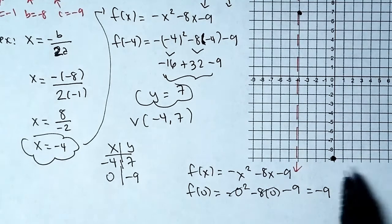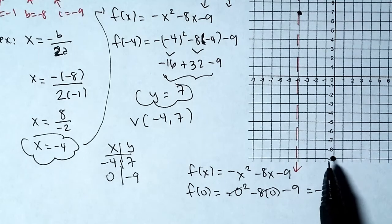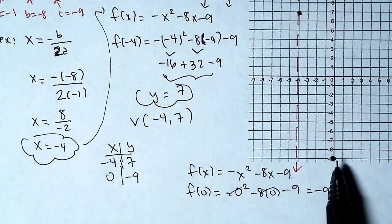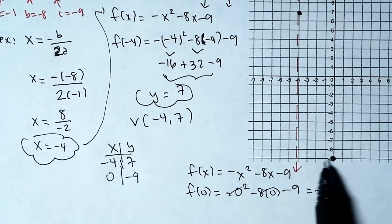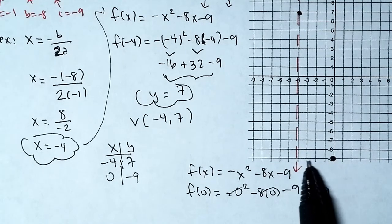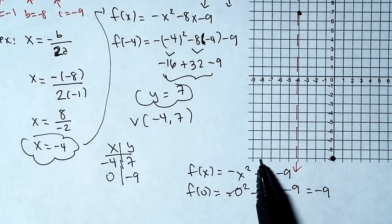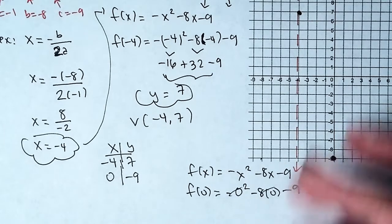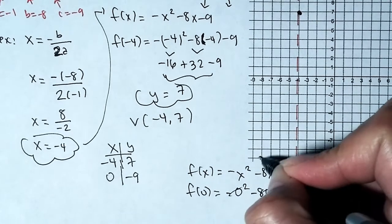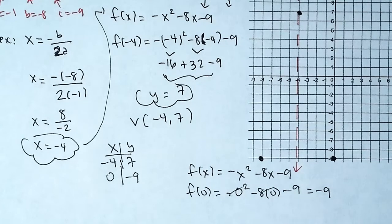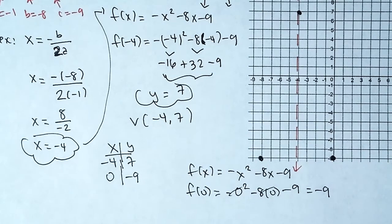Now to quickly locate an additional point, we reflect (0, negative 9) about the axis of symmetry. This point is four units away from the axis, so when we reflect, it should be four units on the other side — one, two, three, four — right there.